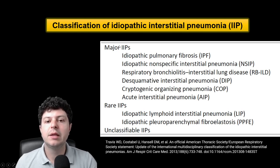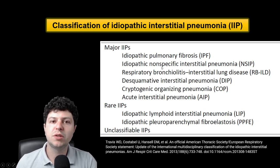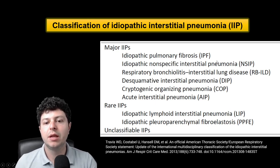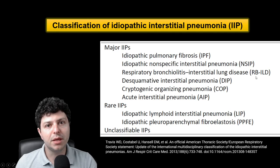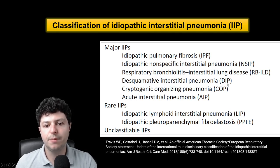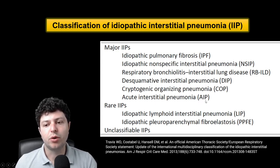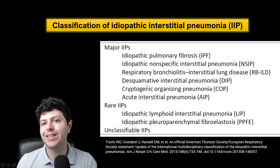In the realm of major IIPs, the well-known ones are: idiopathic pulmonary fibrosis or IPF; idiopathic nonspecific interstitial pneumonia or NSIP; respiratory bronchiolitis interstitial lung disease or RBILD; desquamative interstitial pneumonia or DIP; cryptogenic organizing pneumonia or COP; and acute interstitial pneumonia or AIP. So these are the major IIPs — the major idiopathic interstitial pneumonias.